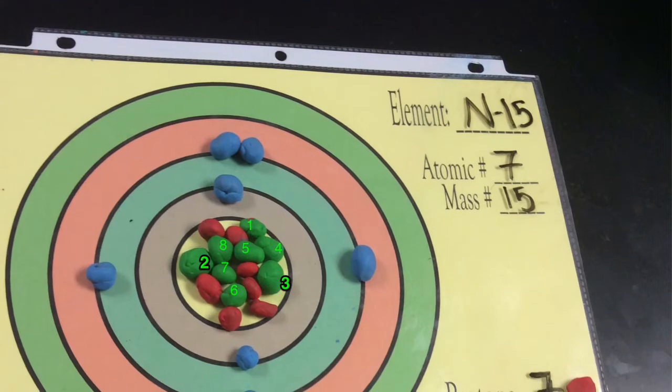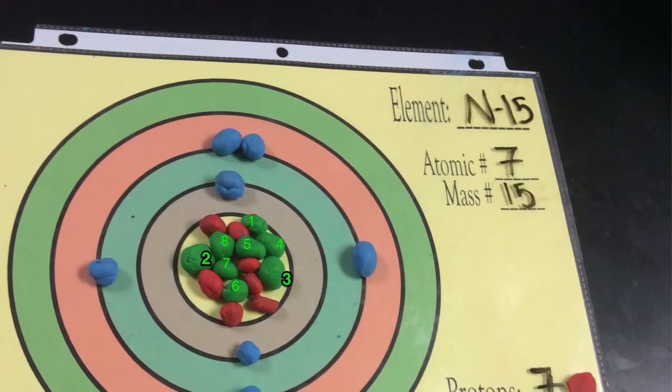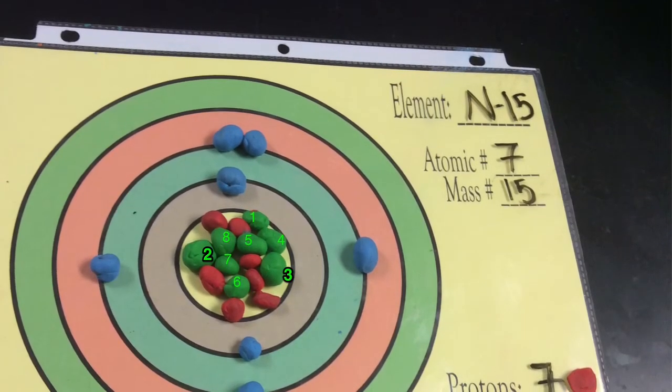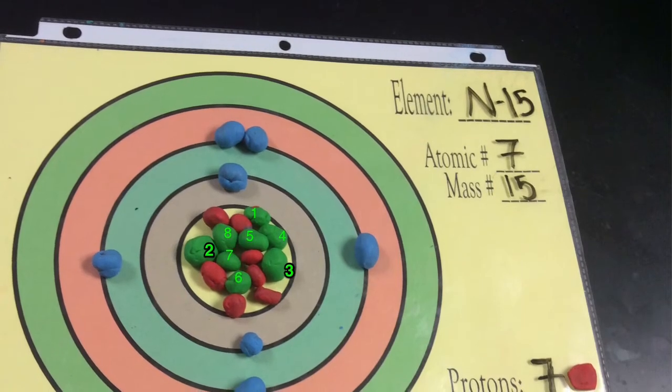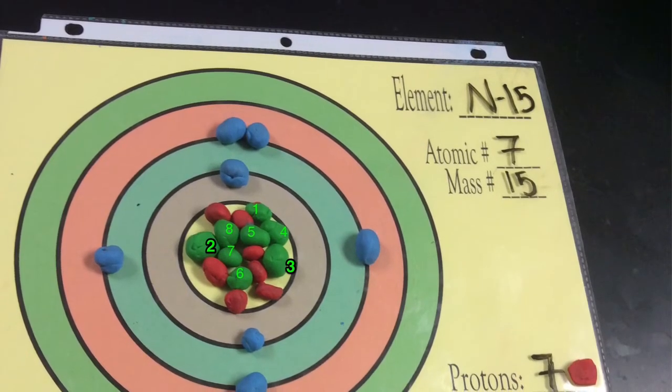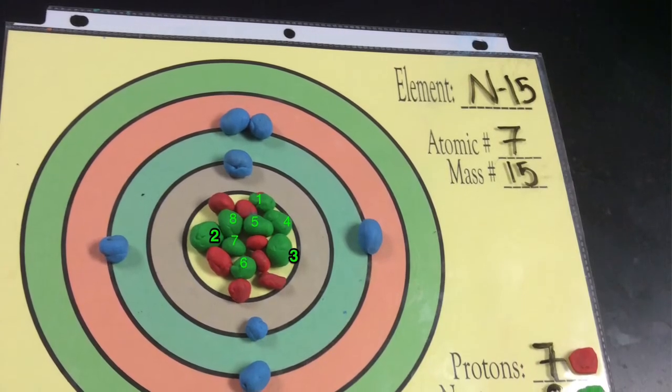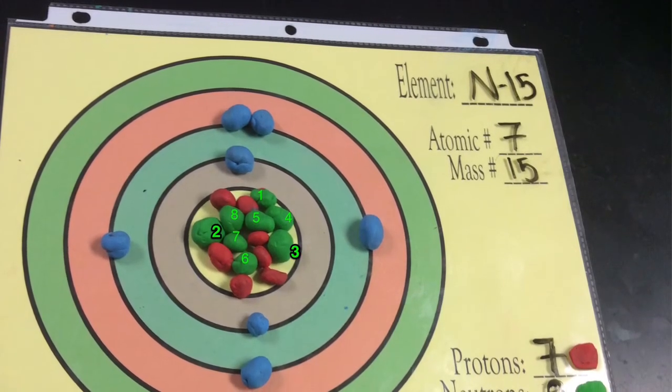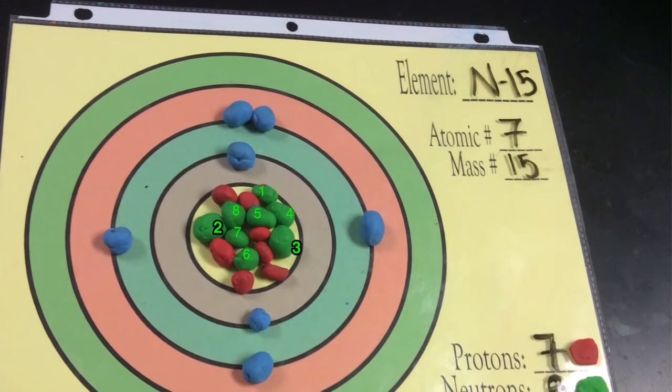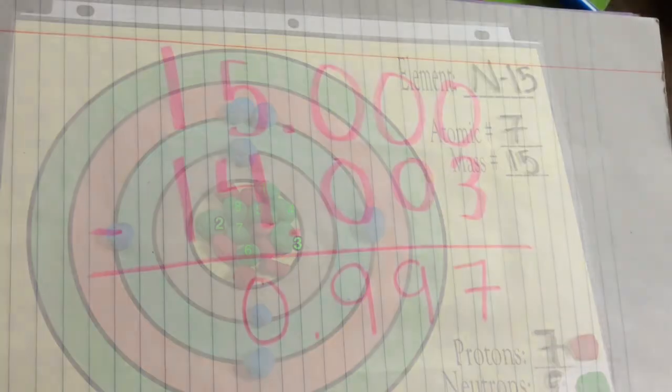N15 is the second and last isotope of nitrogen. N15 has a bigger mass number than that of N14. The mass number is 15. The atomic number of N15 is 7. N15 has 7 protons, 7 electrons, and 8 neutrons.